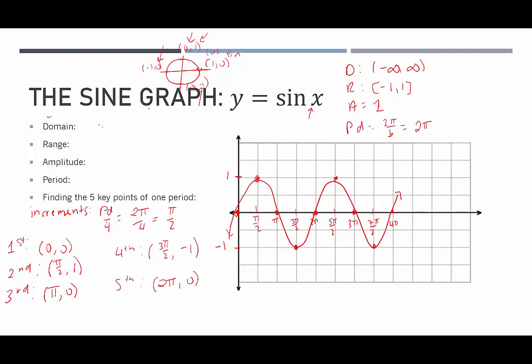A few things to point out from the graph: the middle line sits exactly halfway between the highest point and the lowest point — here it's right on the x-axis. The amplitude is measured from the middle line to either the tallest point or the bottom-most point. We can see one complete cycle starts here and ends here, having hit every major point along the way — up to 1, down to negative 1, and everything in between. This is the parent function of a sine graph.